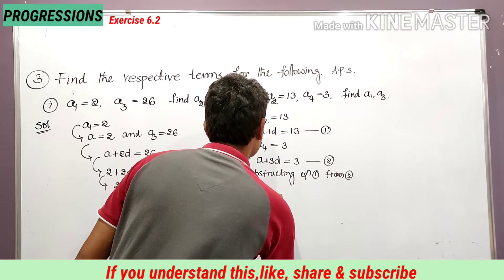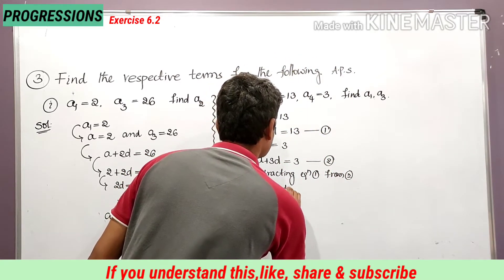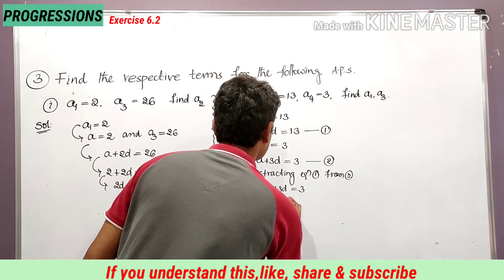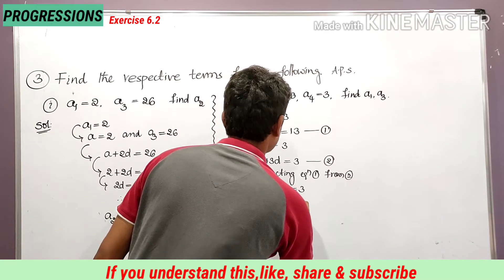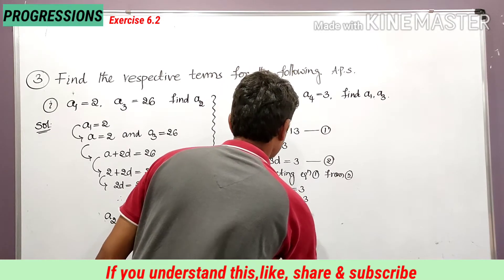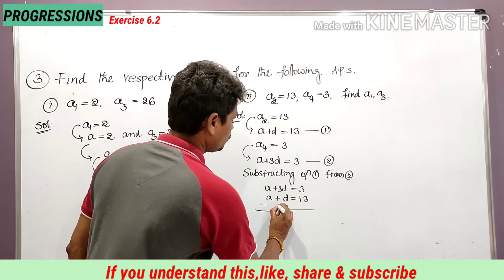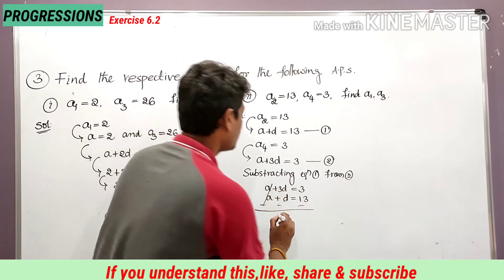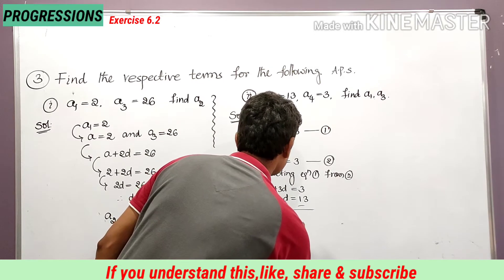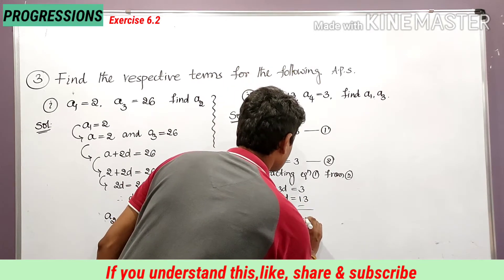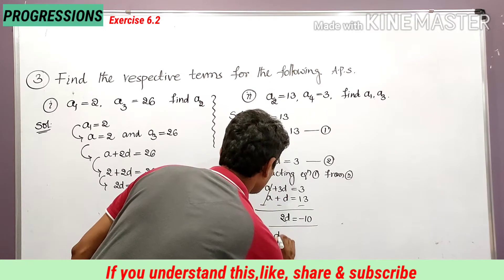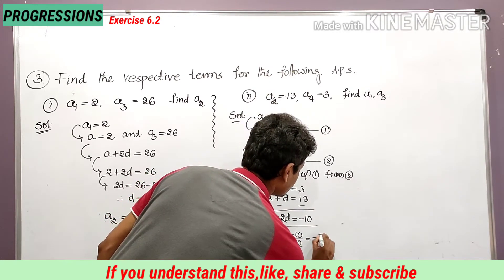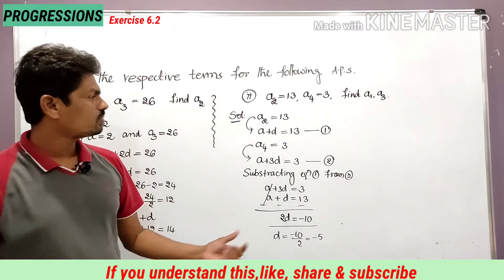Equation 2 is a plus 3d equal to 3, and equation 1 is a plus d equal to 13. Subtracting: the a terms cancel, 3d minus d gives 2d, equal to 3 minus 13 which is minus 10. Therefore d is equal to minus 10 divided by 2, that is d equal to minus 5.